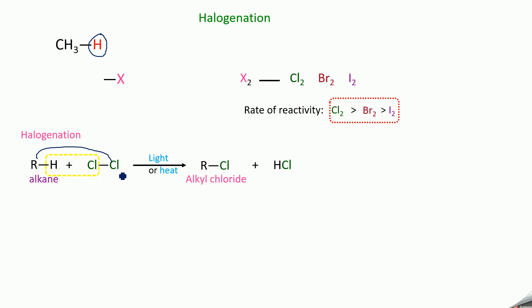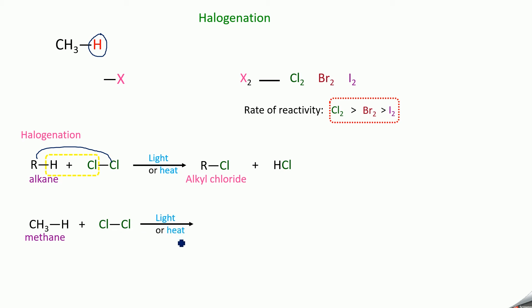Instead of Cl2, if you have Br2, then you get RBr. Similarly, if you have I2, then you get alkyl iodide. If R is CH3, then you have CH3H, that is CH4, methane. On treatment with chlorine in the presence of sunlight or heat, there is a removal of hydrogen chloride and you get CH3Cl — methyl chloride. So this is the chlorination reaction, generally called the halogenation reaction.